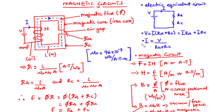If you want to find the current flowing through the circuit, that is equal to the applied voltage divided by the total resistance. Now coming back to the magnetic circuit, the force or source that drives magnetic flux within the circuit is called the magnetomotive force, which is represented as MMF.